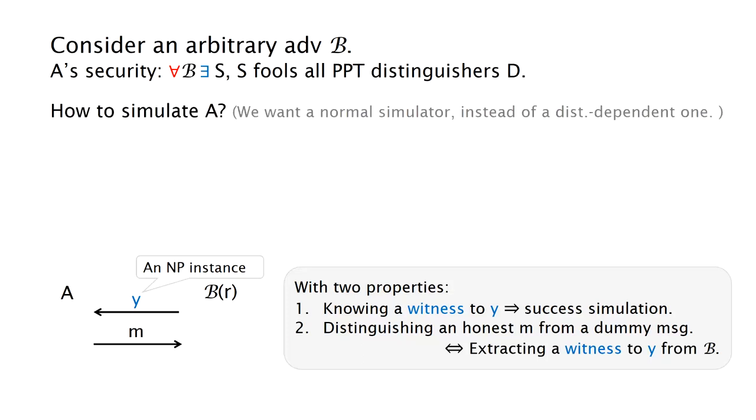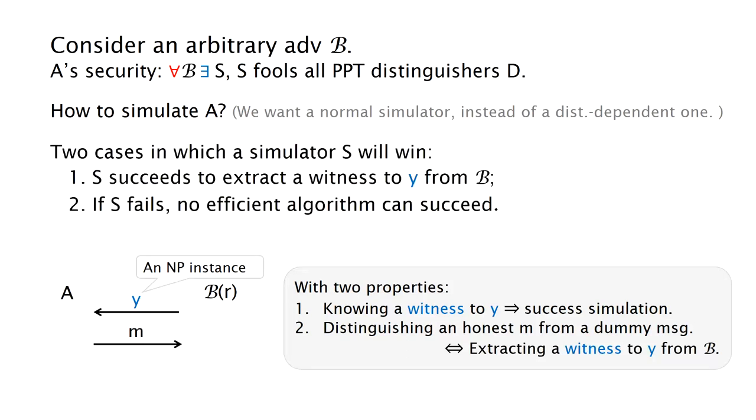Now consider an arbitrary adversary B, and our question is how to simulate the honest party A. Here we just want a normal-defined simulator rather than distinguisher-dependent one. We note that there are two cases in which the simulator will win. The first is the simulator succeeds to extract a witness to Y. The second one is if the simulator fails, then we need to make sure that no other efficient algorithms can succeed.